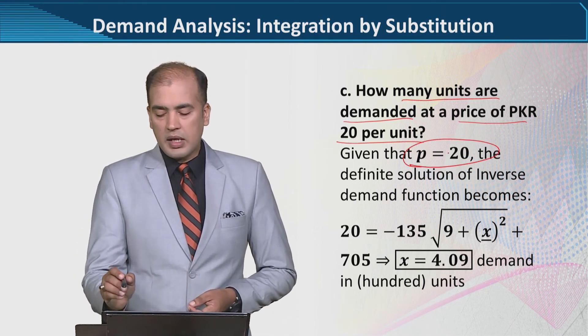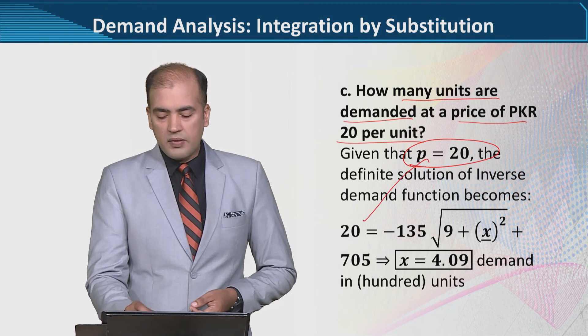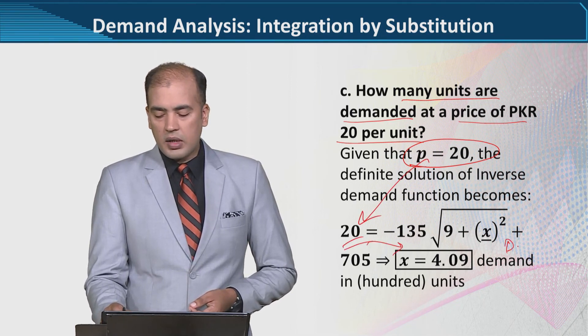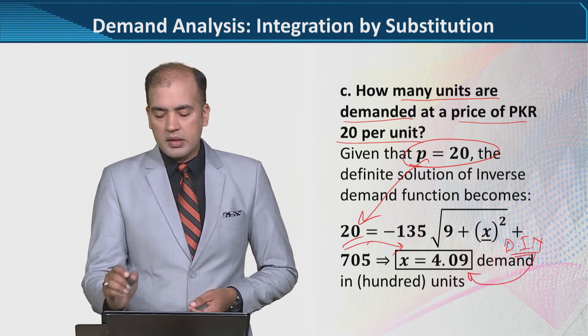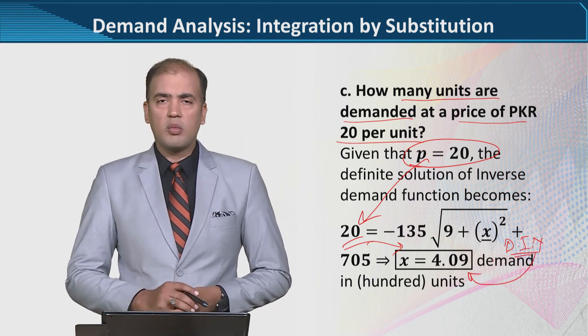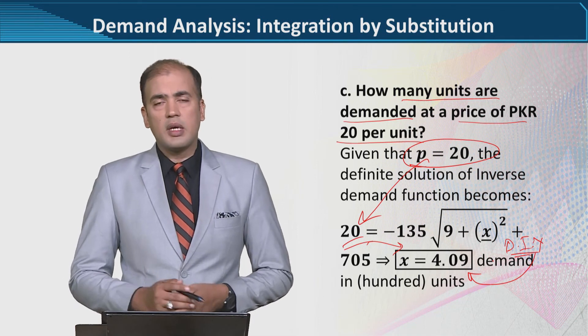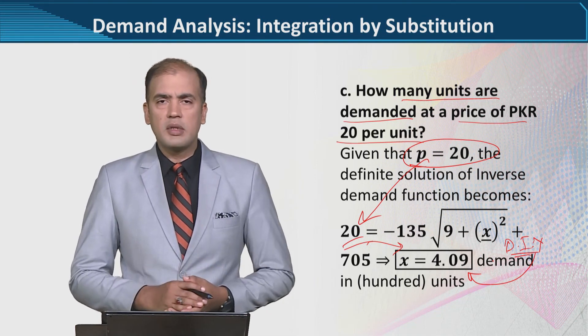Here p was given as 20. So if we put this value in place of p, I can get the value of x. Here again is a rehearsal of basic mathematics, and the value of x, which is the demand, is 4.09 in hundreds as per the given data.